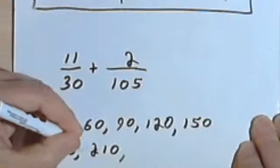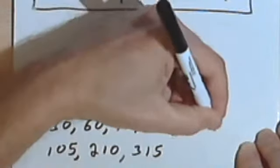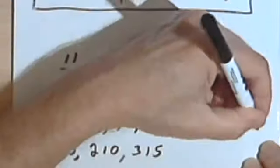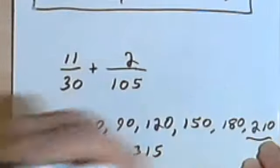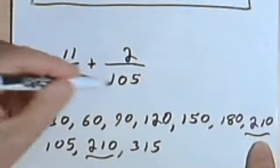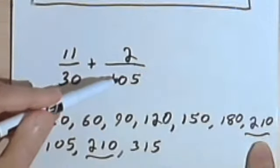Let's see, 3 times 105 is 315. Let's go up to the top row. 6 times 30 is 180. And then we have 210. So 210, it looks like that's the number we're looking for. That's going to be the denominator for both of these fractions so we can add them.